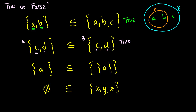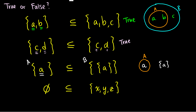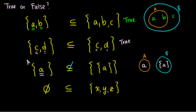Now what about the next one? Is the set {a} a subset of the set {{a}} — the set containing the set containing a? Essentially, is the element a in our second set? The answer is no. On the left we have the element a, and on the right we have the set {a}. Little a is in our set A, while the set {a} is in B. So a is not in B — A is not a subset of B. We just see the set containing a, not a itself. So this is false; we put a line through the subset symbol.